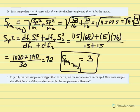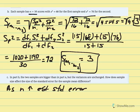Part C asks us to explain the effects of a larger sample size. As n increased from 4 to 16, the estimated standard error decreased — from 6 down to 3. We can take this further: as n increases, estimated standard error decreases, and therefore our t statistic increases. Larger t statistics mean greater likelihood of rejecting the null hypothesis.